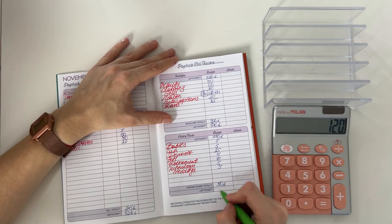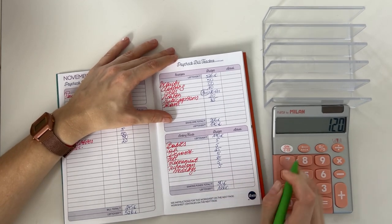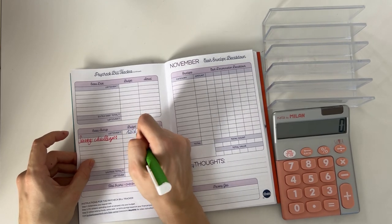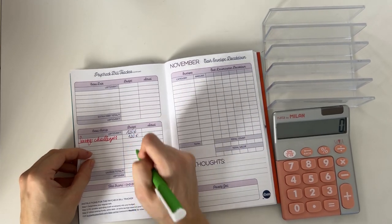170 minus 50 is 120, and all of that 120 is going to go into our savings challenges. That's super fun.